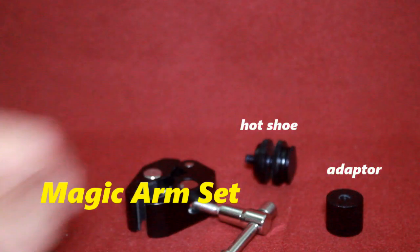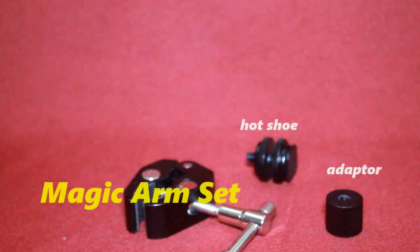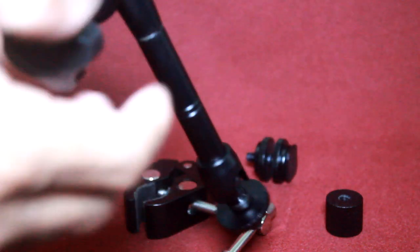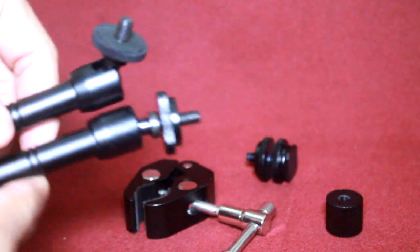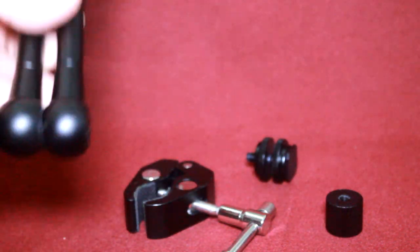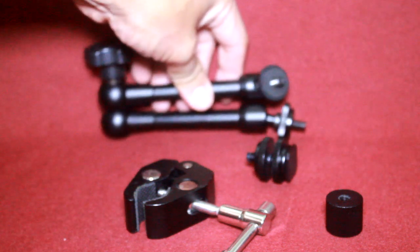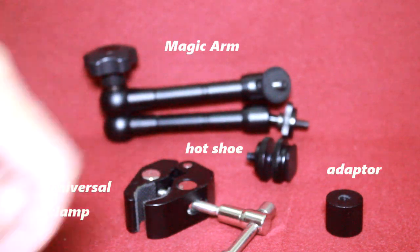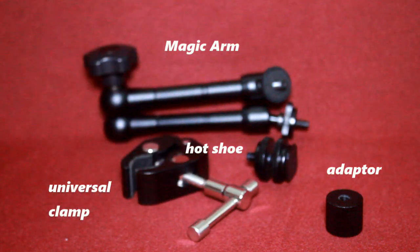So here is item number three. And there you have it, the magic arm set.